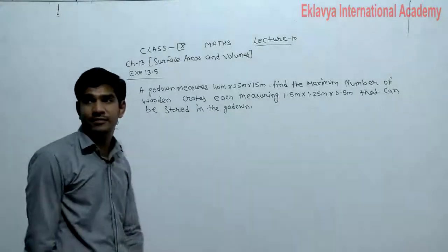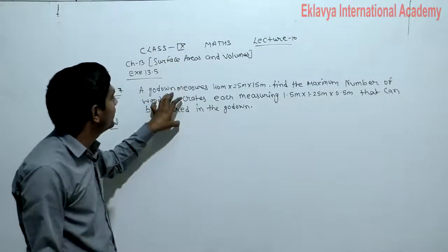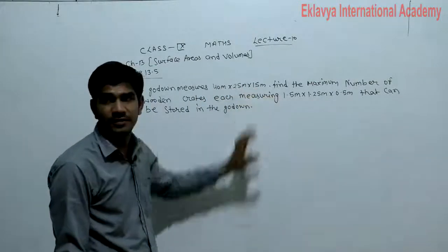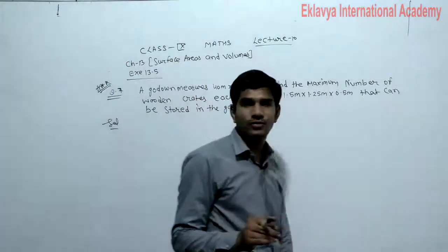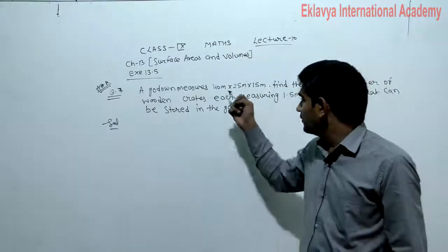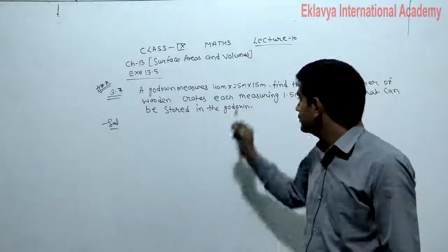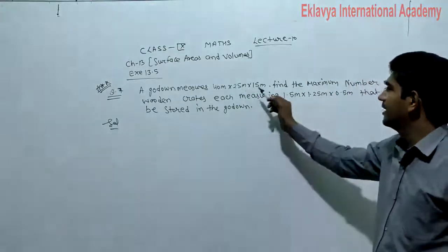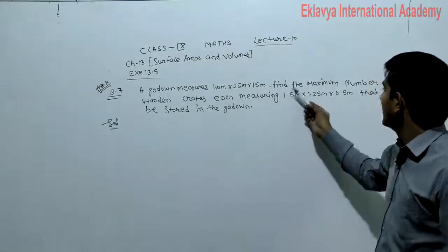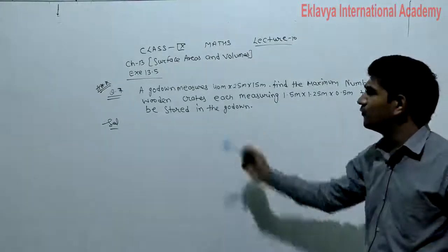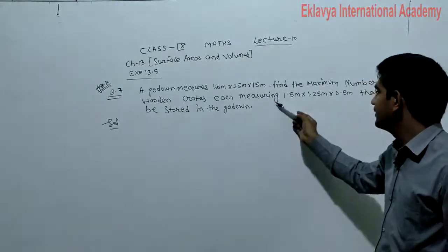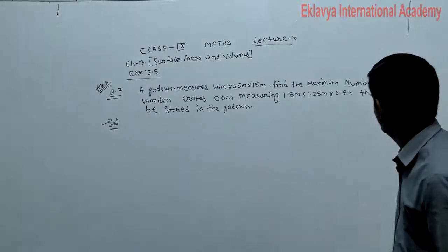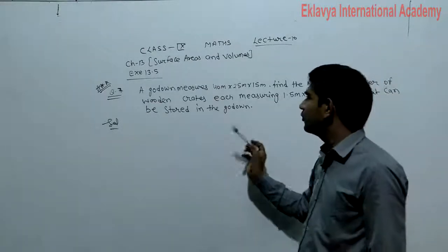In question number 7, what is given to you? A godown measures 40 meters by 25 meters by 15 meters. For that godown, the length, breadth, and height are given to you. Find the maximum number of wooden crates, each measuring 1.5 meters by 1.25 meters by 0.5 meters, that can be stored in the godown.